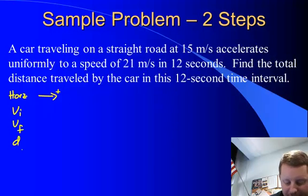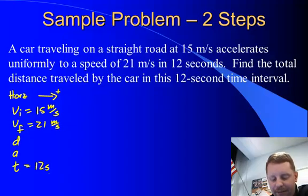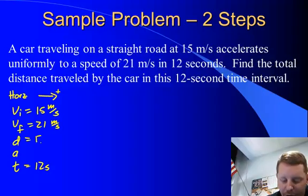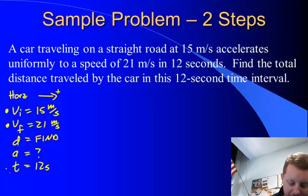And now as we look at the problem, VI, VF, D, A, T, it tells us it starts at 15 meters per second. It accelerates to 21 meters per second, and it takes it 12 seconds to do that. We want to find the total distance traveled in this period of time, and it doesn't tell us anything about acceleration. So we know VI, VF, T, and we're looking for D.